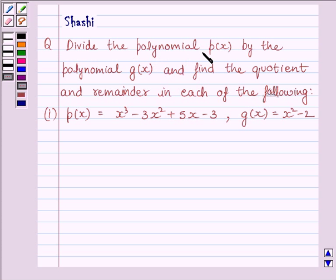Question says, divide the polynomial P(x) by the polynomial G(x) and find the quotient and remainder in each of the following. First part is, P(x) is equal to x³ - 3x² + 5x - 3, G(x) is equal to x² - 2.